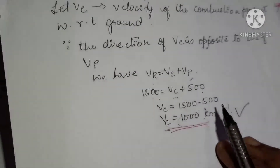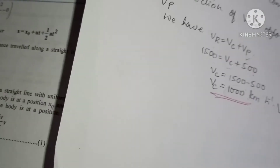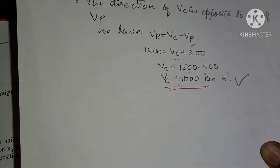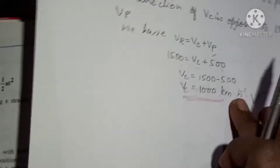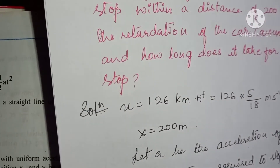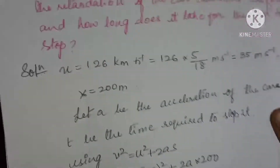So the velocity of the combustion gases with respect to the ground is 1000 km per hour. Now let us go to the next problem.